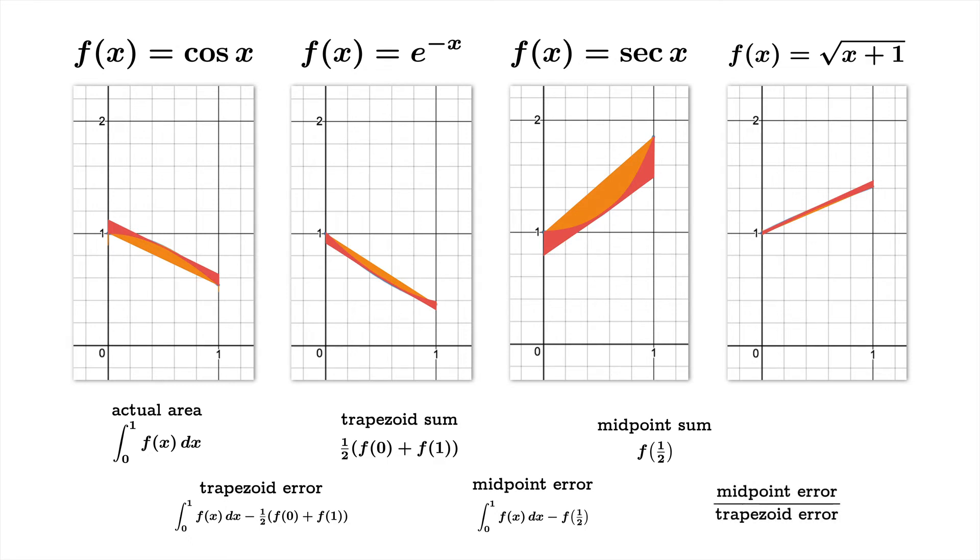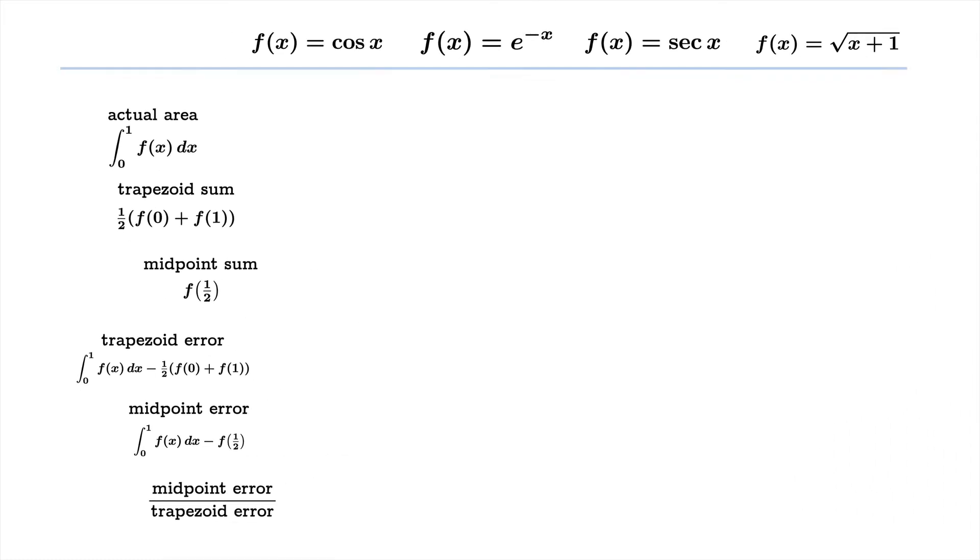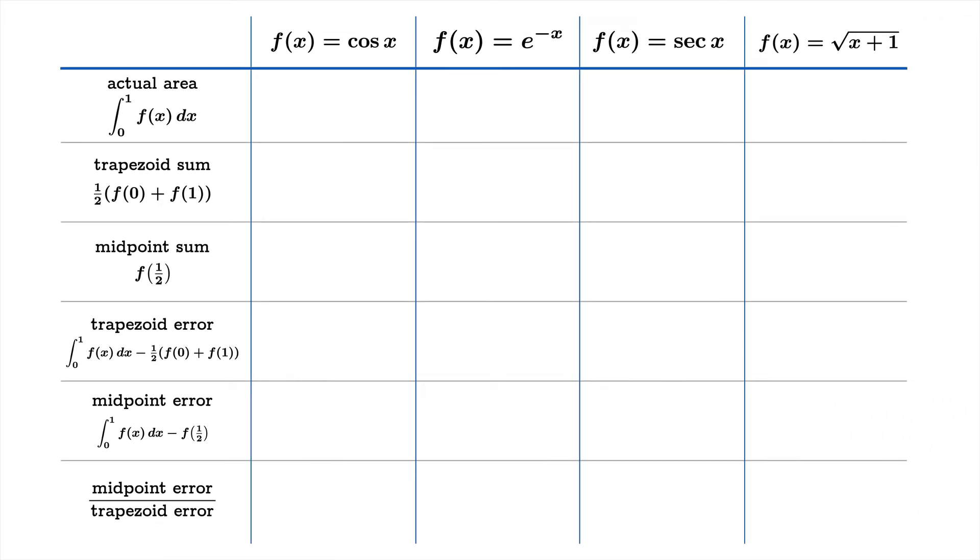And then finally we'll calculate the ratio of the midpoint error to the trapezoid error. Here we go, giant table. We're just going to crank all of these out using your favorite tool, online utility to crank these out numerically, a graphing calculator, whatever it takes.